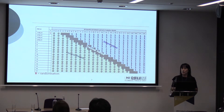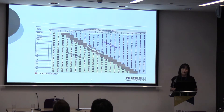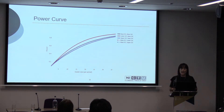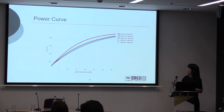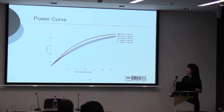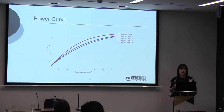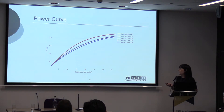Once we uploaded that design, the app produced a power curve. At 0.8 — representing 80% power — moving across to our line and then down, this tells us that approximately 28 patients per cluster per period are required to achieve 80% power. Multiplying the number of PICUs by the number of steps — 20 — by 28 patients gives a total of 9,520. We have already exceeded that, so our power is in excess of 80%.